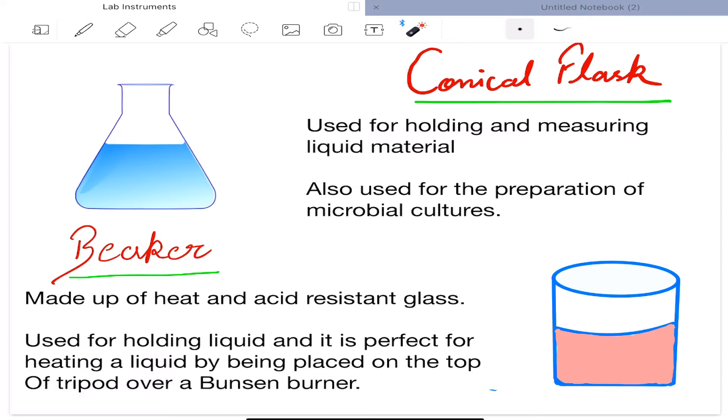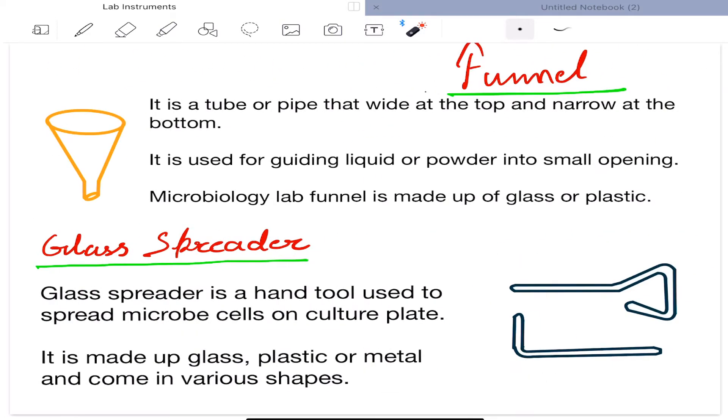Next is beaker. Beaker is made up of heat and acid-resistant glass. It is used for holding liquid and it is perfect for heating a liquid by being placed on the top of tripod over a Bunsen burner. Next is funnel. It is a tube or a pipe that is wide at the top and narrow at the bottom. It is used for guiding liquid or powder into small opening.